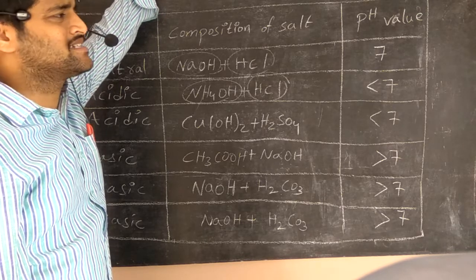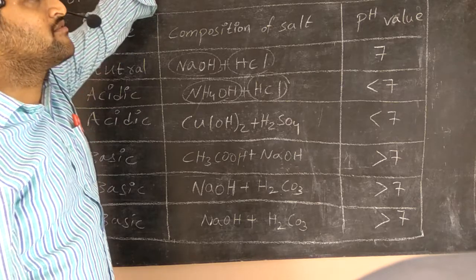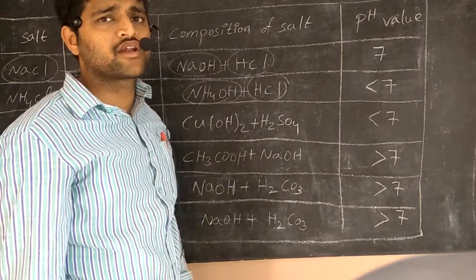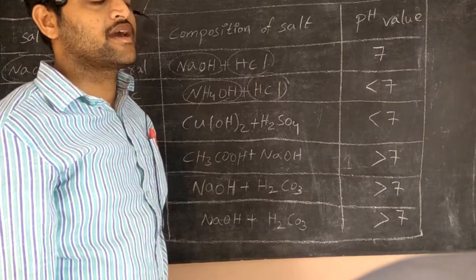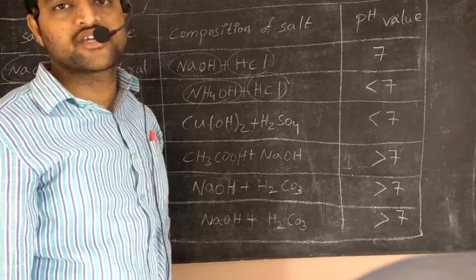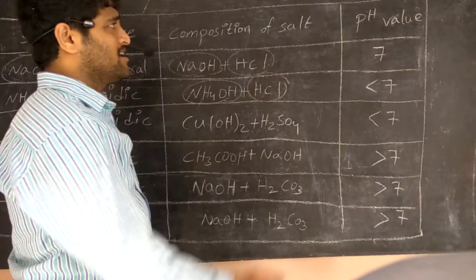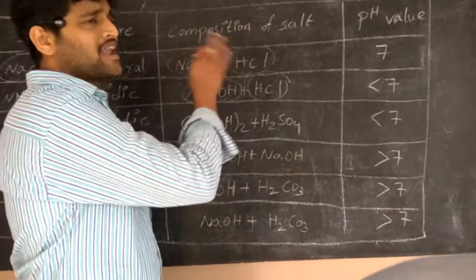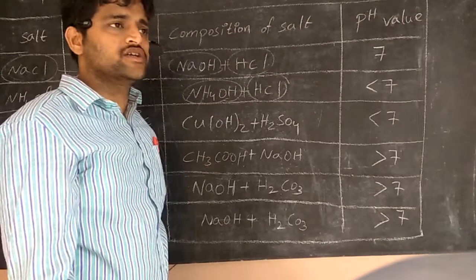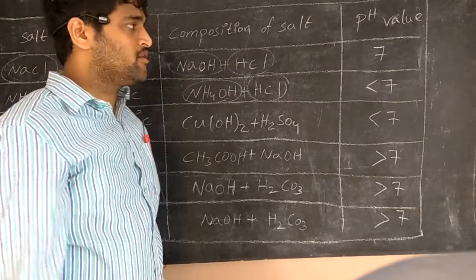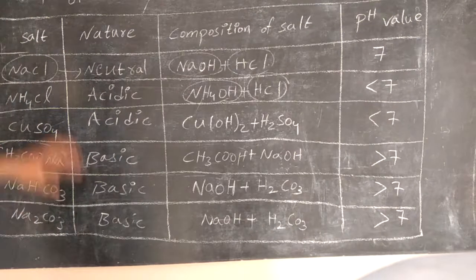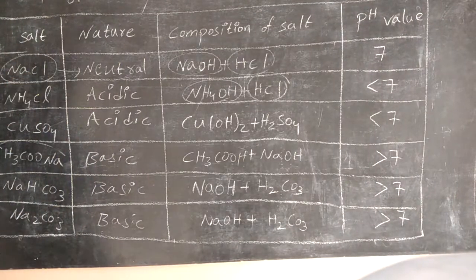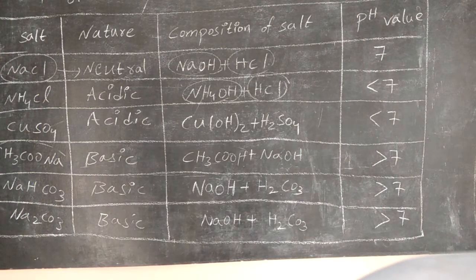Acidity problems faced by some people can be neutralized by adding bases like magnesium hydroxide. These are the general applications of pH in our daily life, and these are the basic things we learn from acids and bases, which are very helpful for our lives.